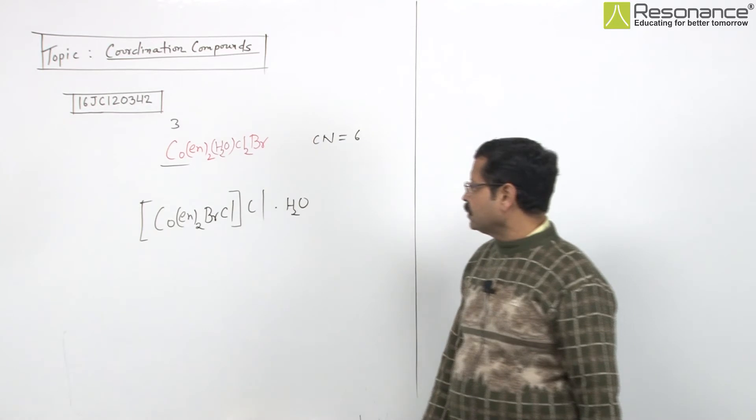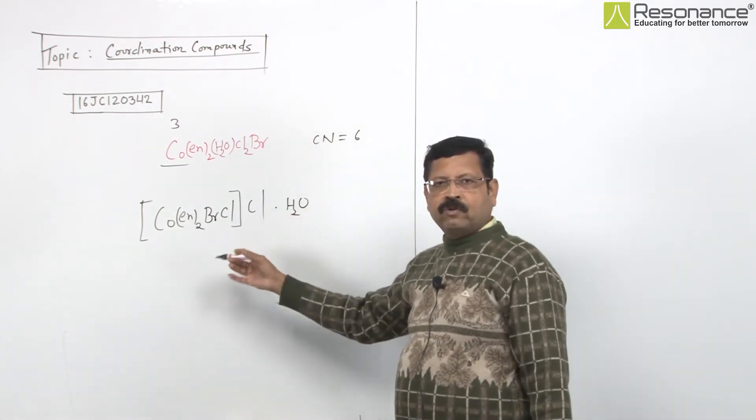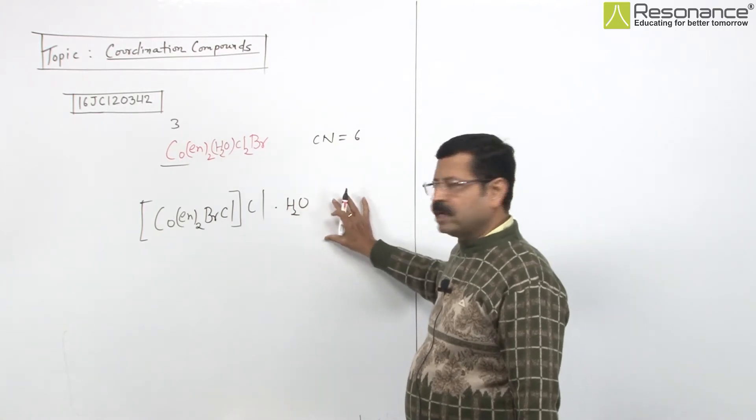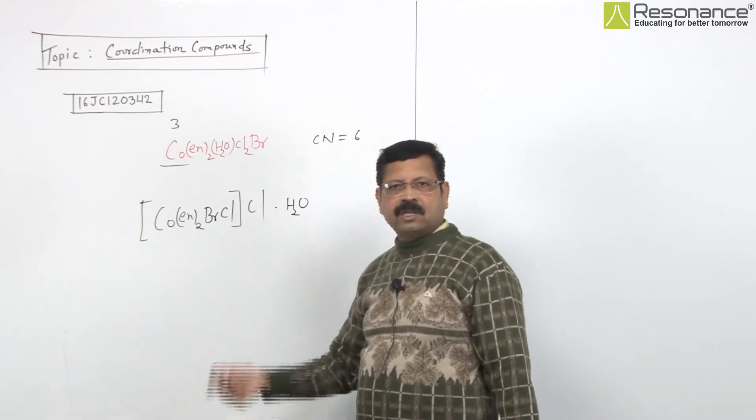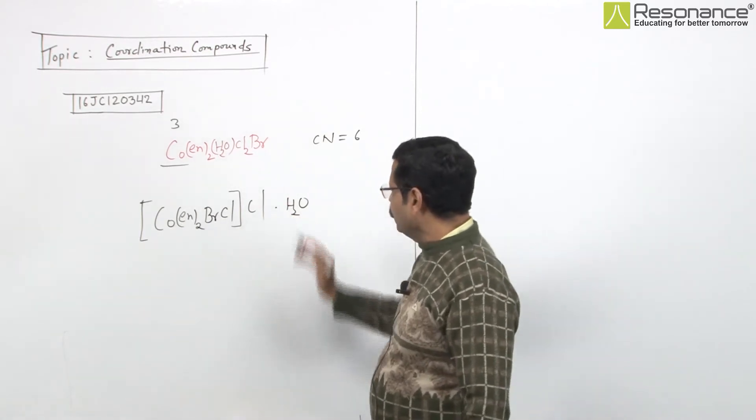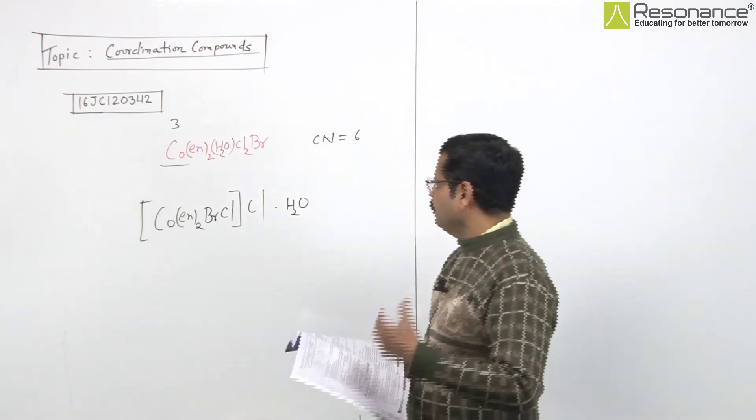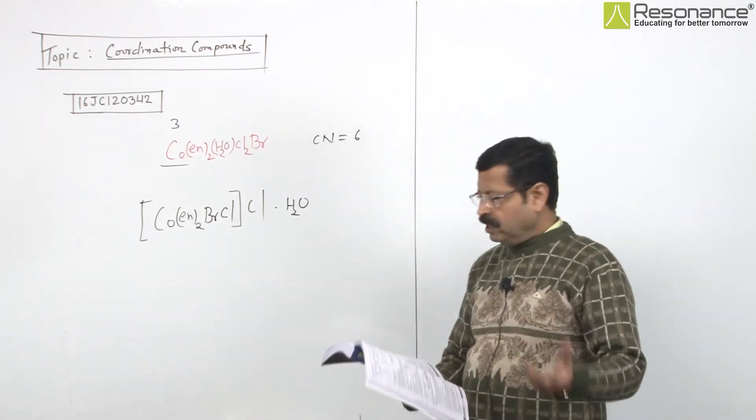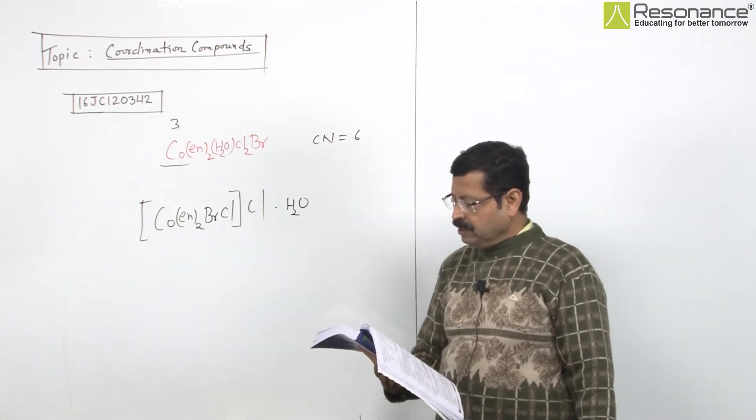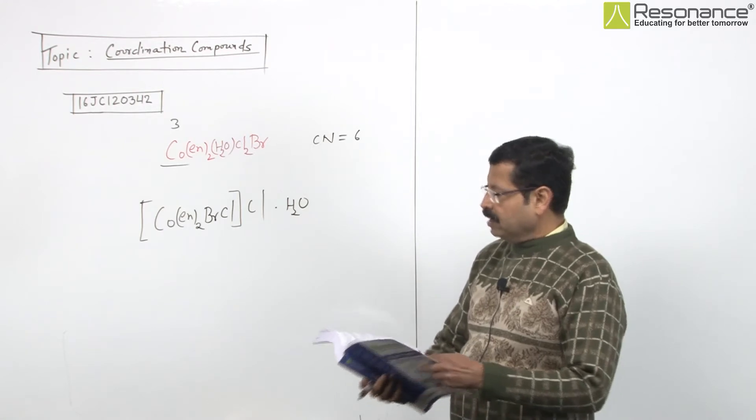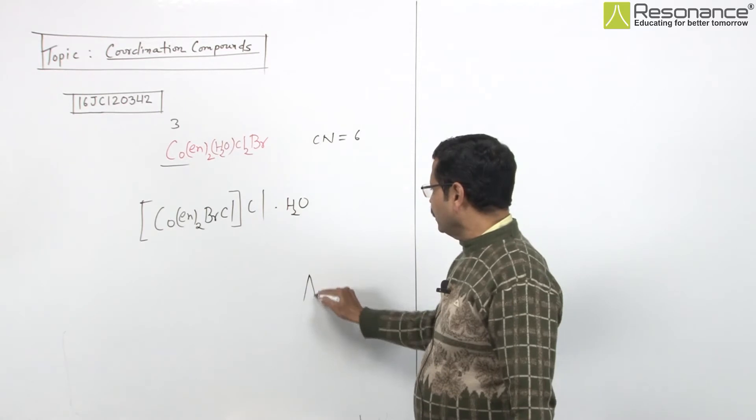The point is: will it show weight loss with H2SO4? Yes, because crystalline water is present outside. Will AgNO3 give HgCl precipitate? Yes, it will give white precipitate. If it were AgBr, it would be light yellow. And there's additional information in the chemical reaction.